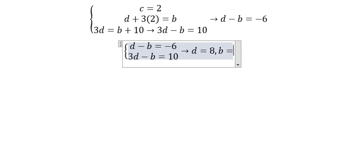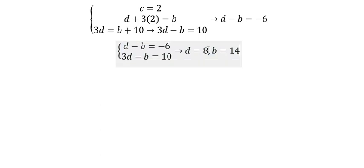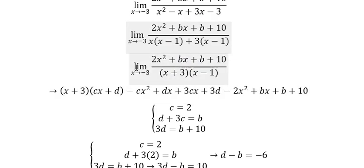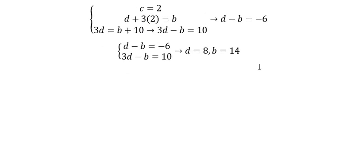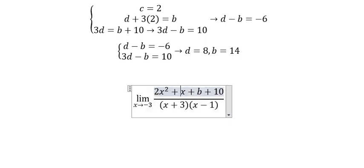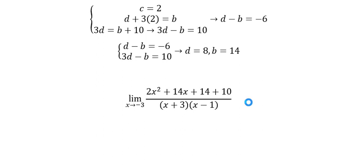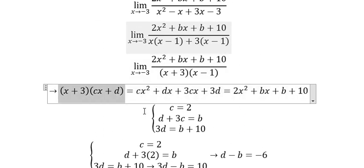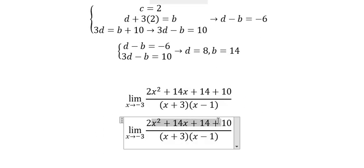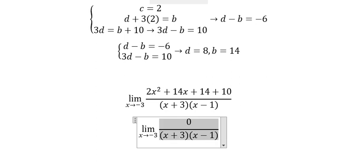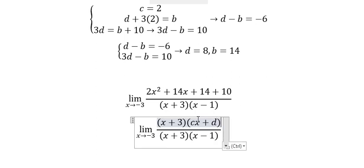Now we need to find d and b. Solving this system gives d equals 8 and b equals 14. So we found b equals 14. We also have c equals 2 and d equals 8.